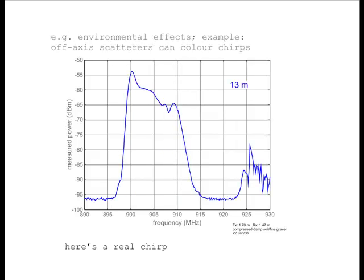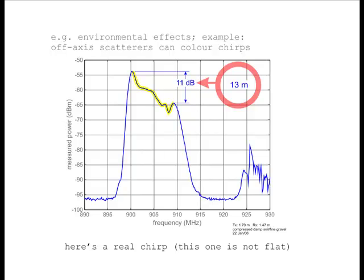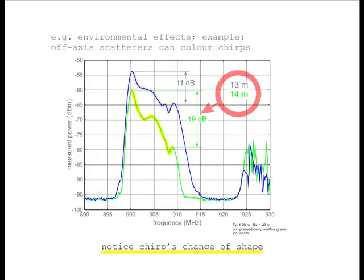Here's a measured chirp, and it's not flat because the transmitter is relatively low quality. There's a variation from the low frequency side of the chirp to the high frequency side of the chirp of 11 dB. That was measured at a range of 13 meters for a particular geometry and test setup. When the chirp was re-measured at 14 meters, we see a change in not only power level but also its shape. The change in power from low frequency to high frequency across the chirp has become 19 dB, not 11 dB.